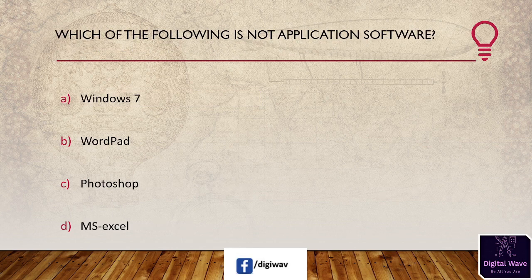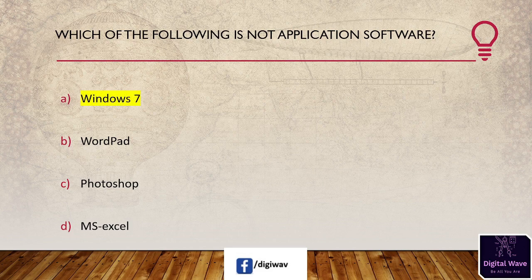Next question: which of the following is not application software? Options: Windows 7, WordPad, Photoshop, MS Excel. The right answer is Windows 7. Windows 7 is not application software because it is an operating system.